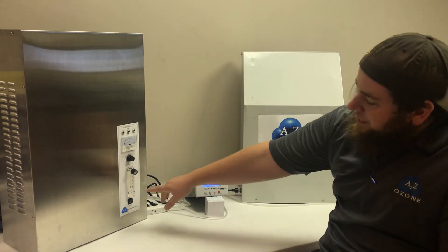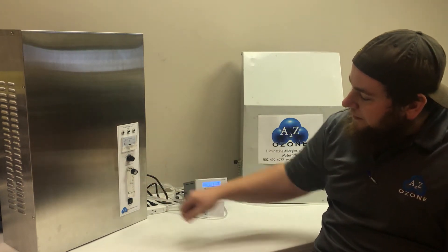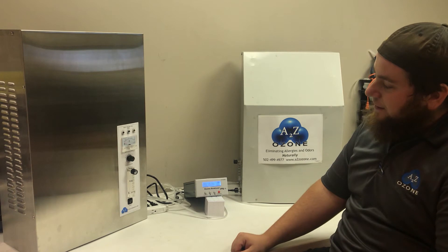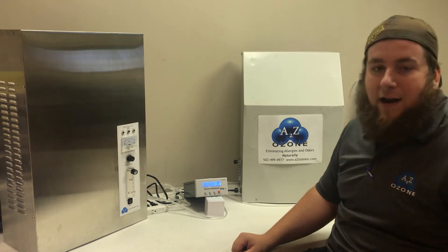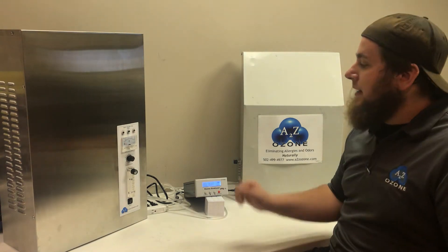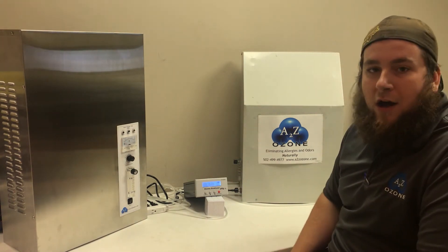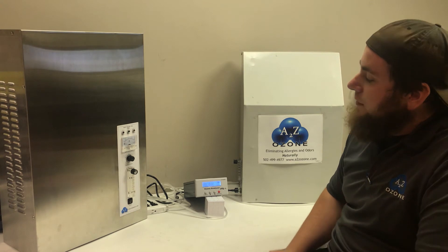You can watch your flow meter on the front rise until it reaches the point you need. We're just about at our eight. Alright we're at our eight liter per minute so now we can go ahead and turn on our ozone generator.